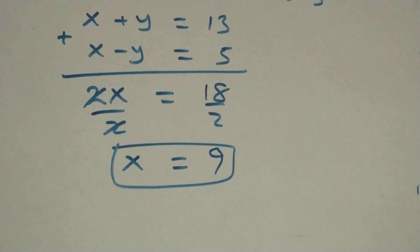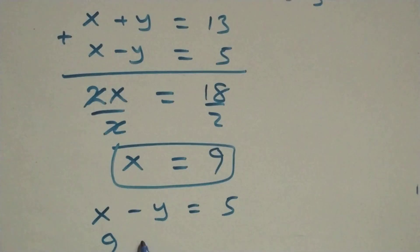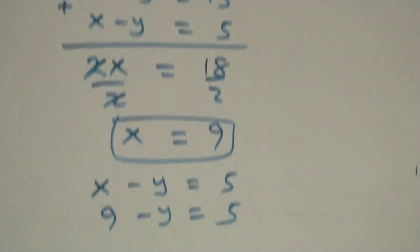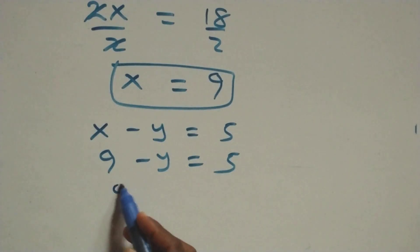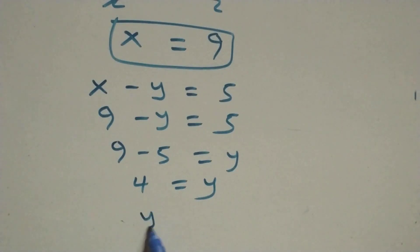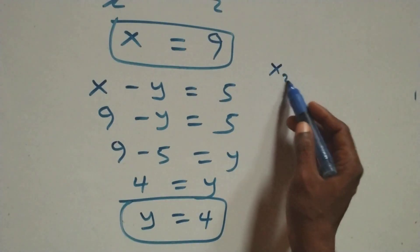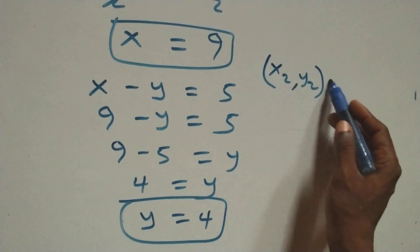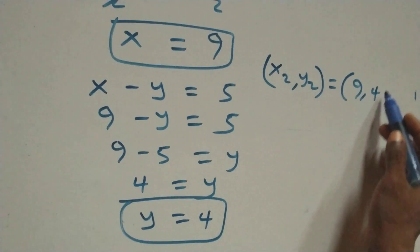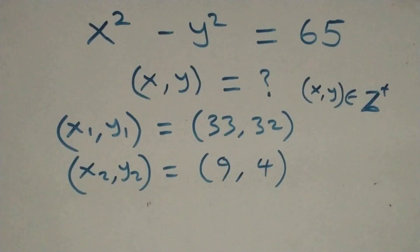To get y, we use equation 2: x minus y equals 5. Substituting x equals 9, we get 9 minus y equals 5, so y equals 9 minus 5, which is 4. The second set of solutions is x₂, y₂ = (9, 4).